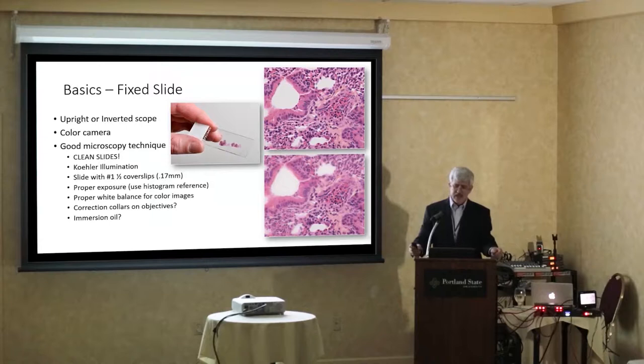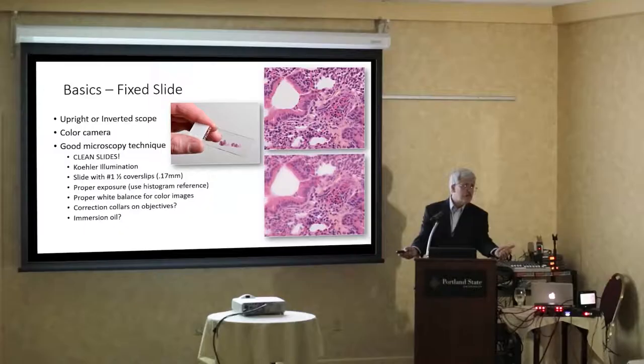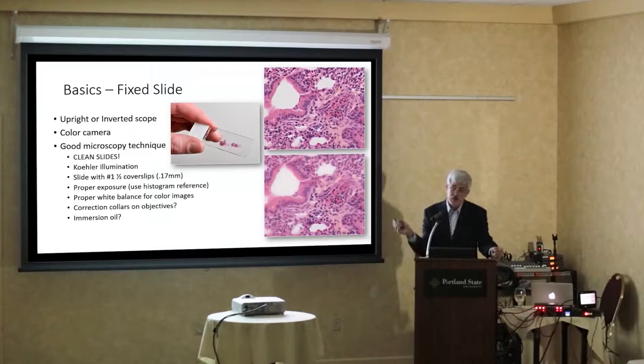Back to basics: thick slide — somebody comes with a slide and an H&E image to take. It goes back to the very basics of microscopy. If we're going to do a slide, do I need an upright scope or an inverted? On a slide you can do it on either. But you do need a color camera to do an H&E.